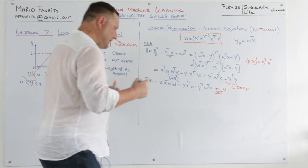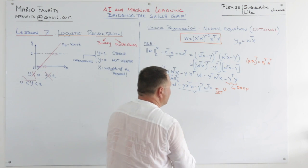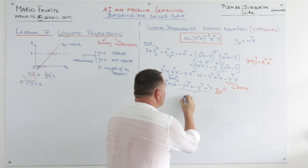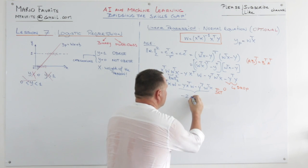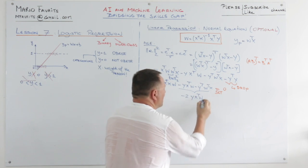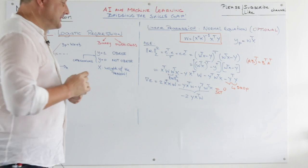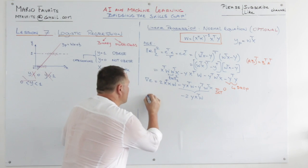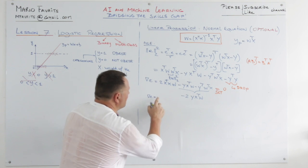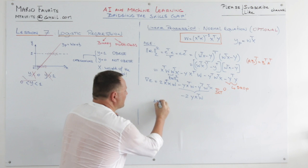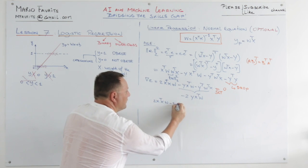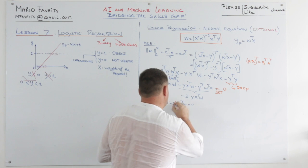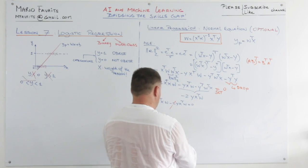Now, these two terms — minus Y X transpose W and minus Y transpose W transpose X — are basically the same term, just transposed. So we can write this as minus 2 Y X transpose W, picking one and ensuring the dimensions are correct. So the gradient of the error equals 2 X transpose X W minus 2 Y X transpose W equals zero. We can cancel the 2's.